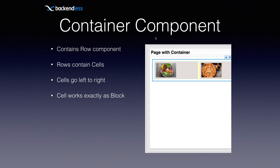The container component — remember there are two: container and block. The container component is more specialized. While block can contain anything, with container the structure is more finite. Containers can contain only rows, and rows go top to bottom, row after row. Every row can contain cells, and cells are organized left to right. The cell itself works exactly like a block — it is the most flexible part that can contain any kind of content.